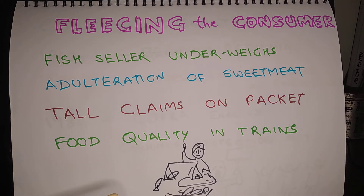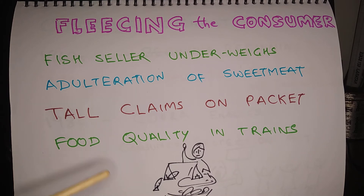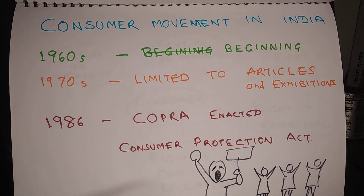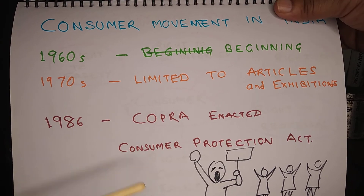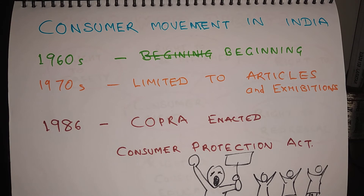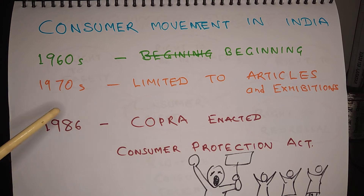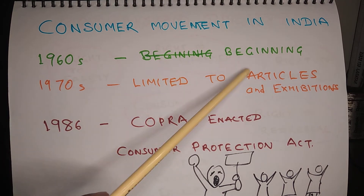A big problem is the horrible quality of food being served in trains, whether you buy it from the pantry or from an outside vendor. In 99 percent of cases you will end up with a horrible taste because of bad quality food in the railways. Because of this problem, which was even more rampant during the 1950s and 60s, people started the consumer movement. It can be said that the consumer movement in India began somewhere around the 1960s.